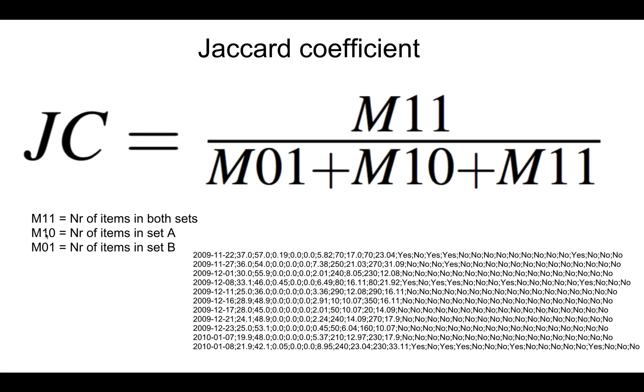And the M10 is basically the number of items that only exist in set A, where there is a yes here and a no here, and you would count how many of these there are. And then M01 is the opposite where they only exist in set B and how many of those there are. So then you sum them up together and you do this division.